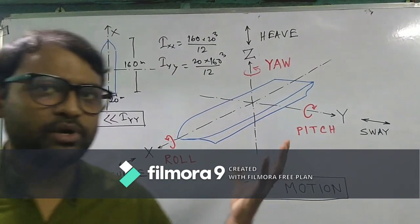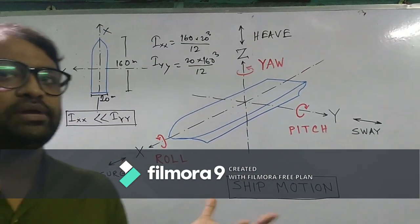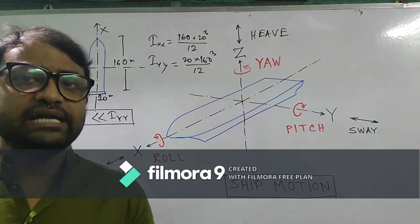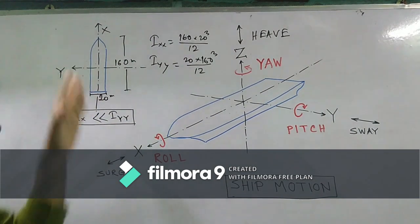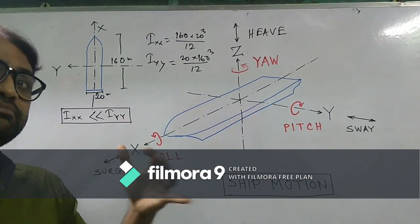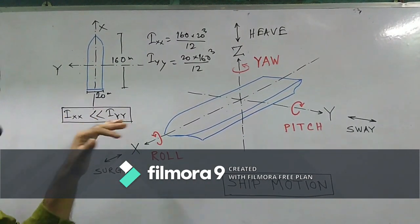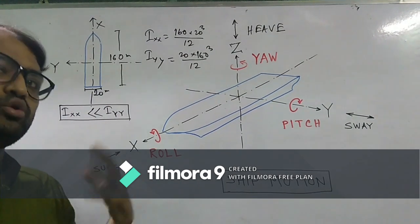And Iyy would be our 20 into 160 whole cube divided by 12. You could calculate at any point of time, but whatever result you will be getting, you can see that the Ixx, which is moment of inertia about x axis, is coming as much lesser than the y axis, than the moment of inertia about y axis.